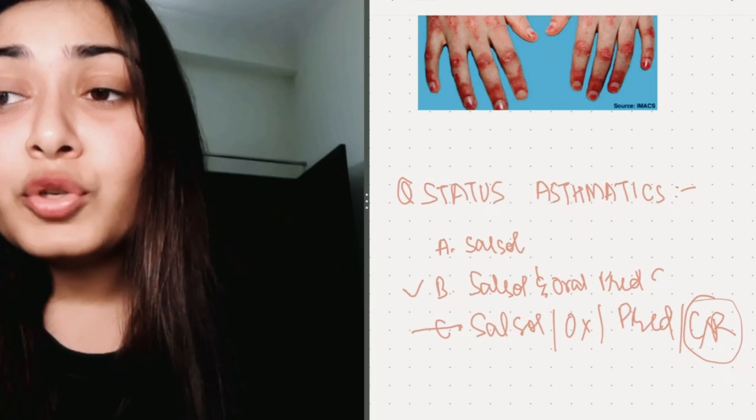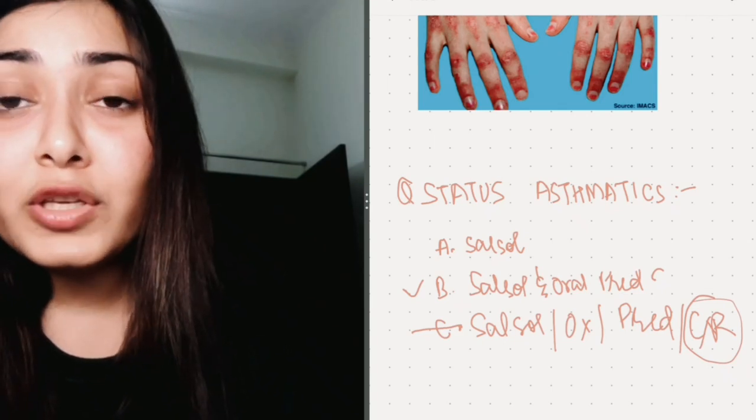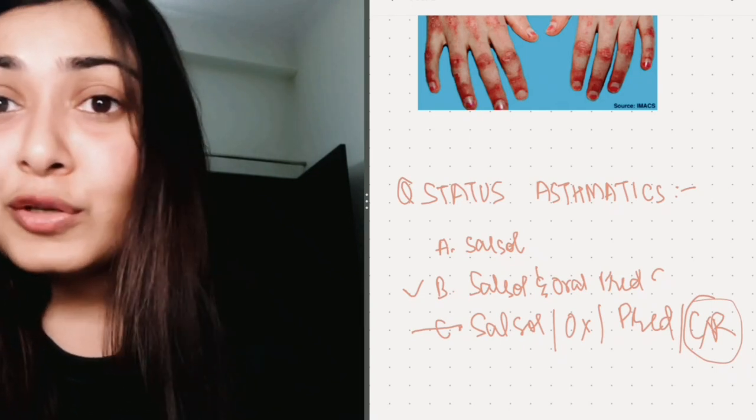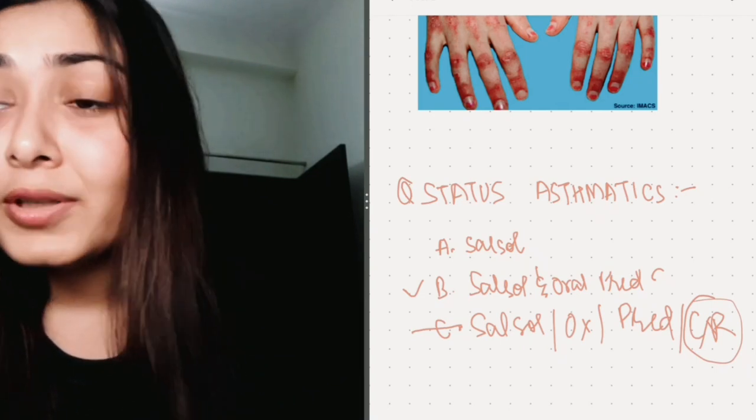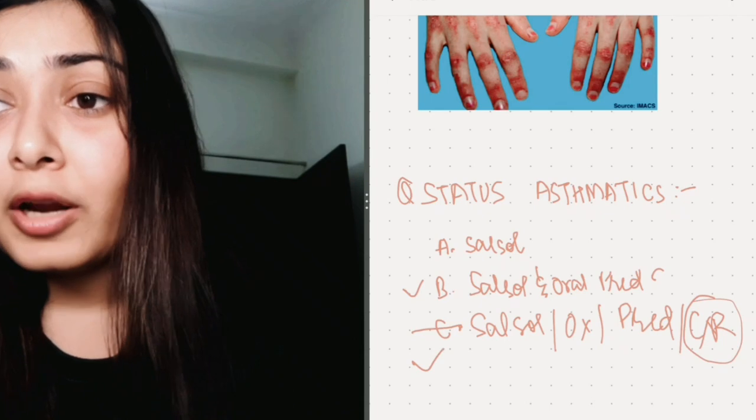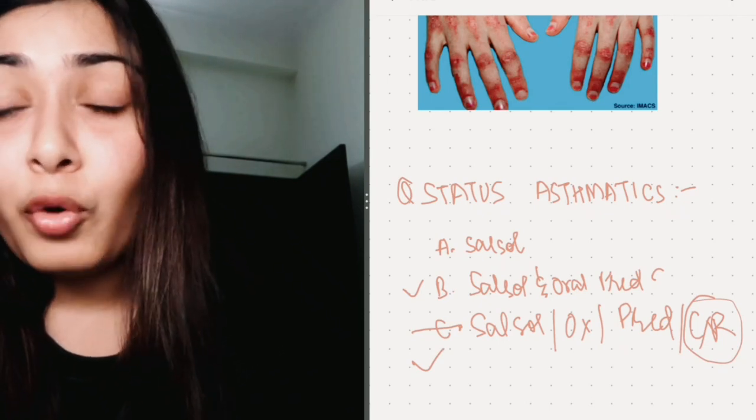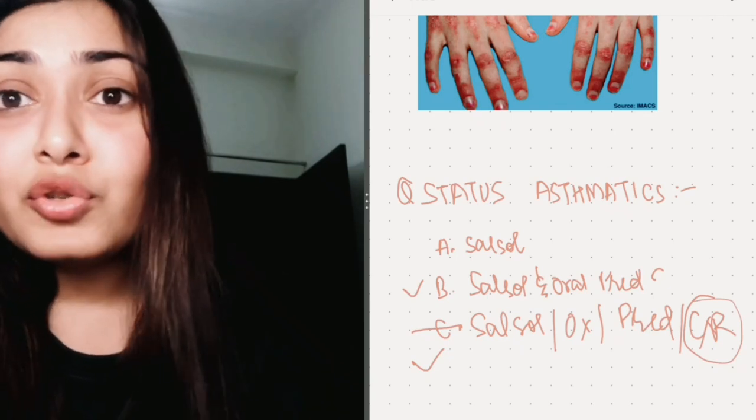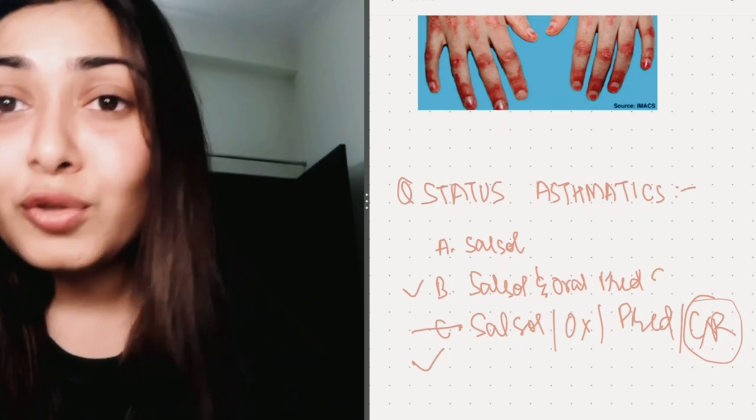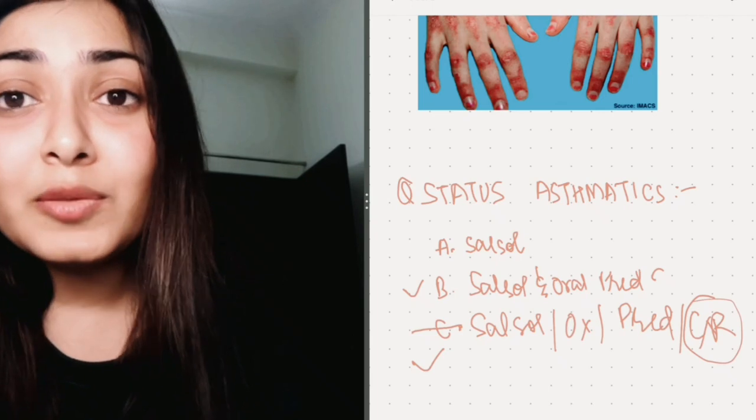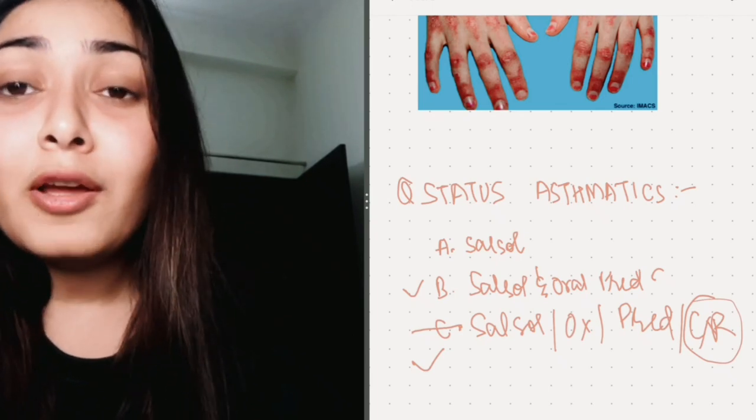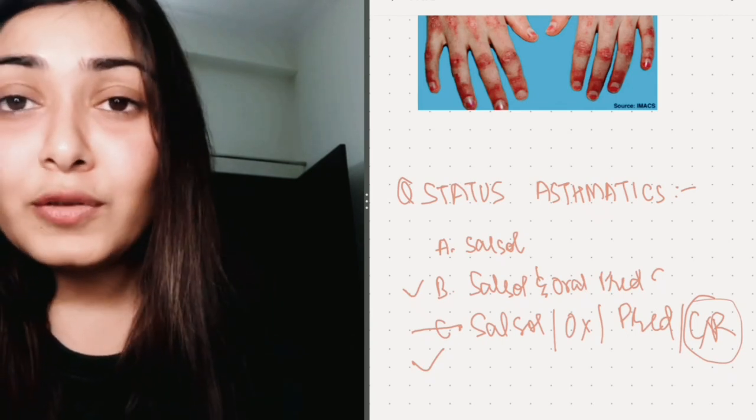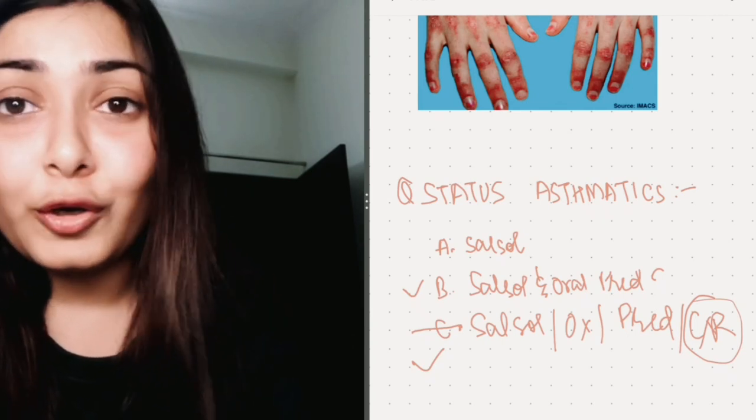If the option, if the question asked which of these can be used, then or the best option amongst all these, then the C would be the right option. But the point here is that chest x-ray is not routinely recommended. If the question mentioned first episode or the child is not improving or the child requires PICU admission or you are not sure about the diagnosis, then chest x-ray would be there. Otherwise, it won't be there in the correct option.